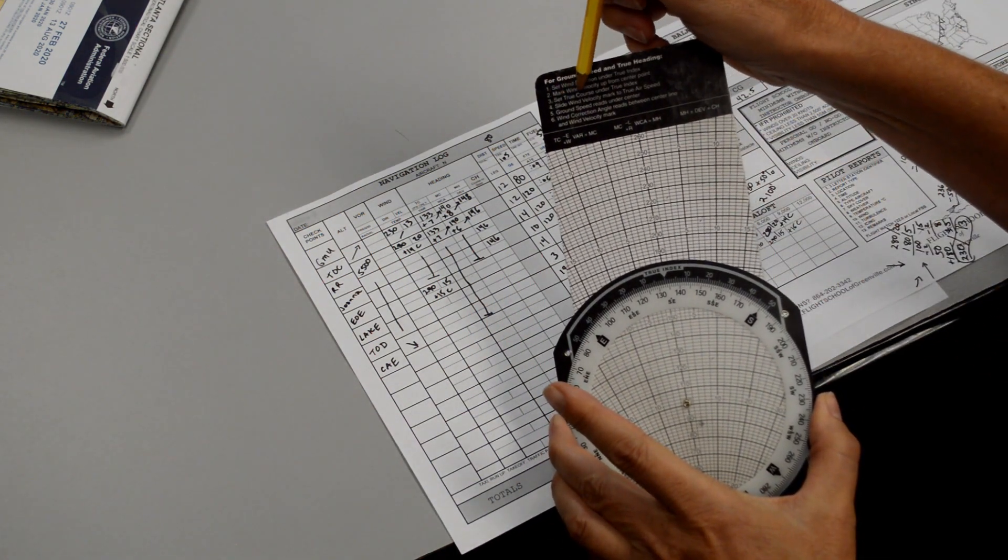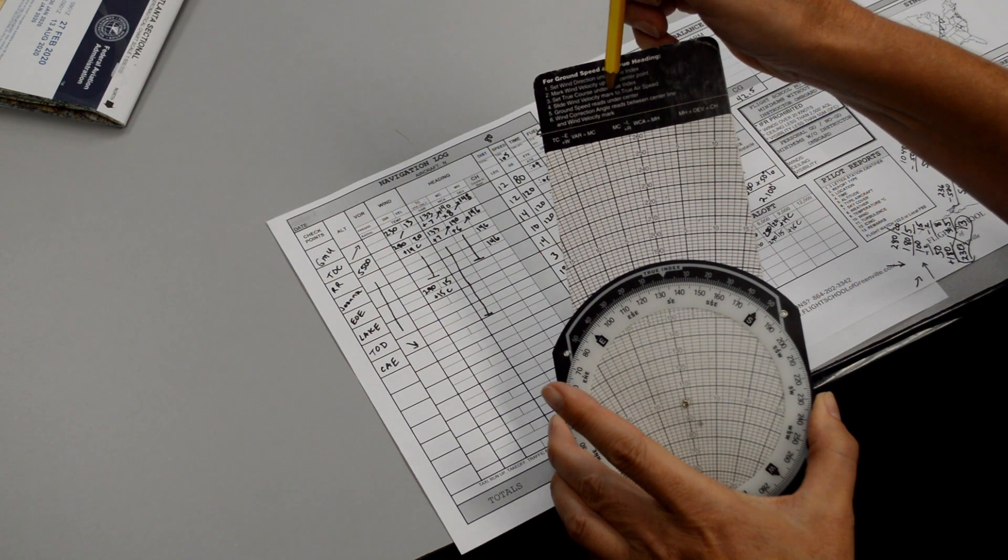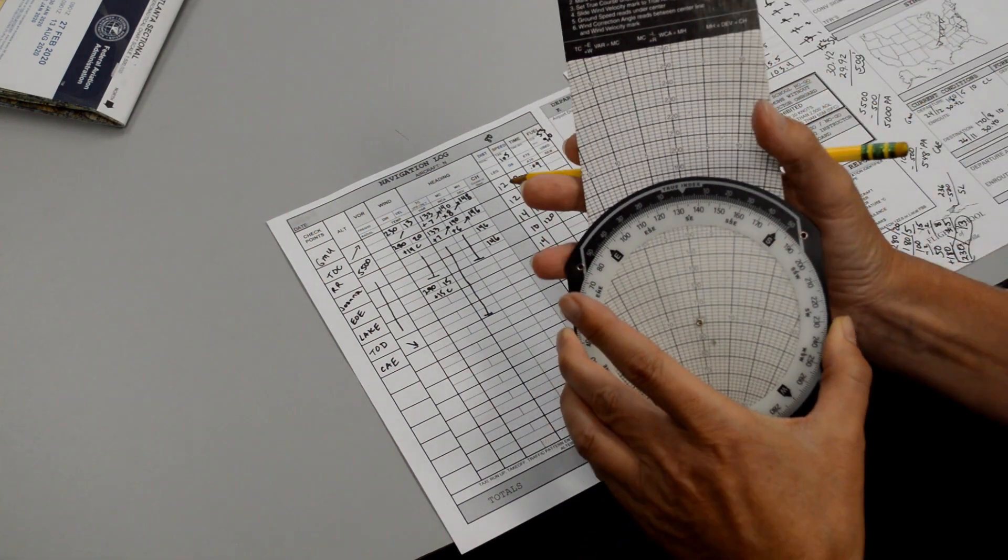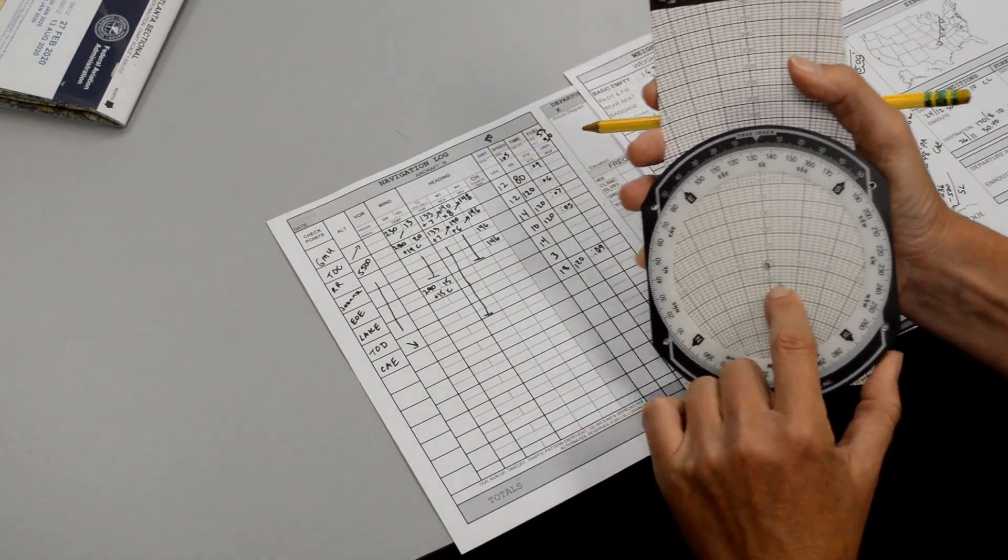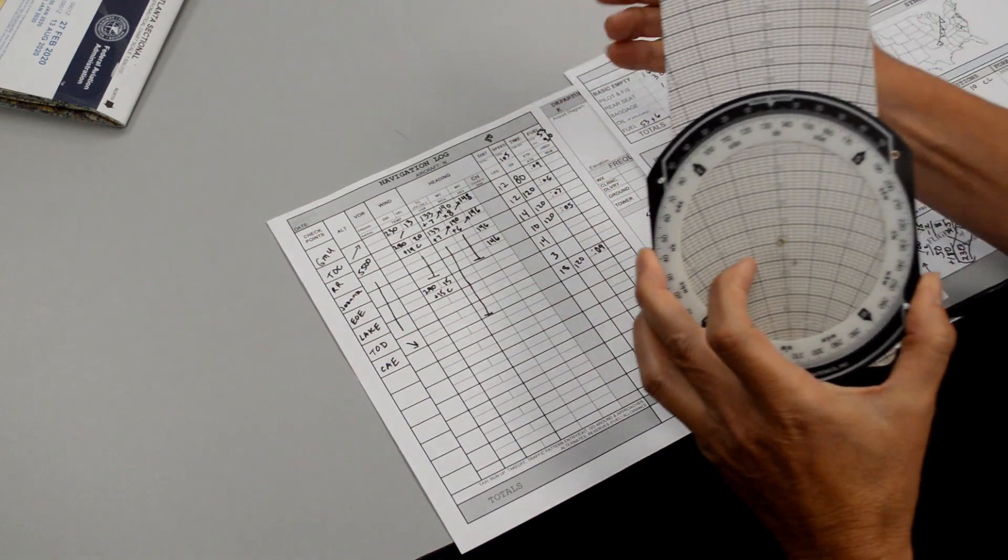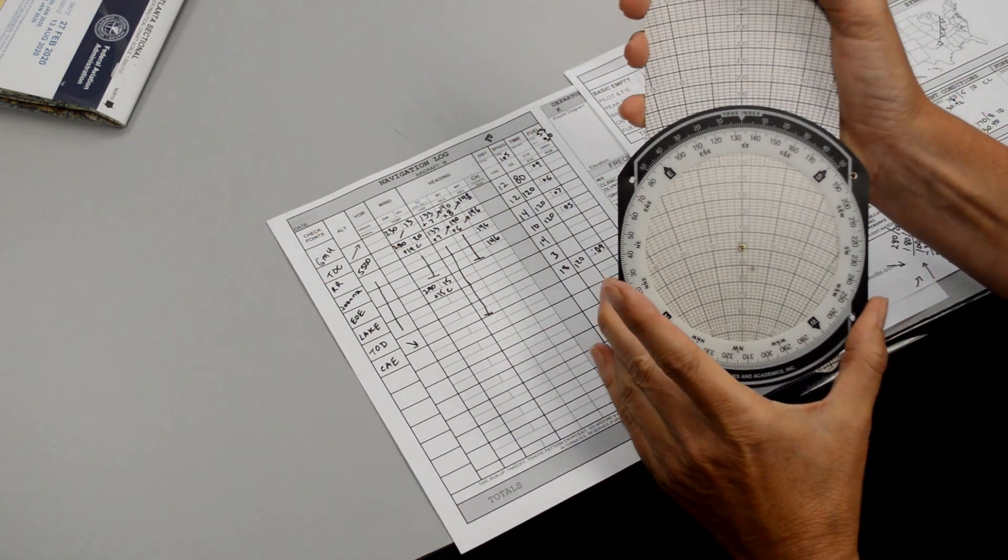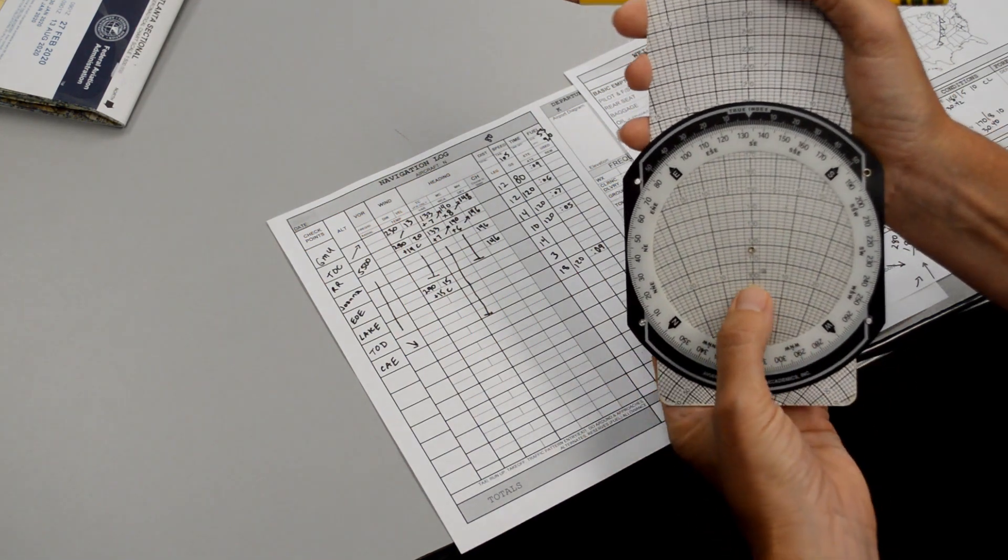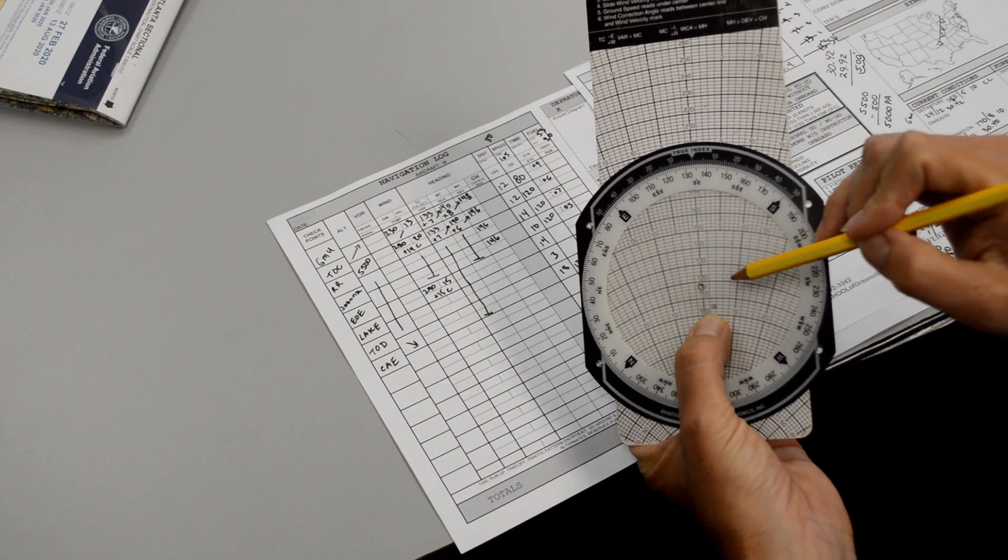Number 4 says slide wind velocity mark. Remember again that's the mark that you made with your pencil. Slide the mark you made with your pencil to the true airspeed. So here's our pencil mark. And our true airspeed we got out of the performance charts 105. So I slide the whole thing up until my pencil mark sits on 105. And now two bits of information are revealed.